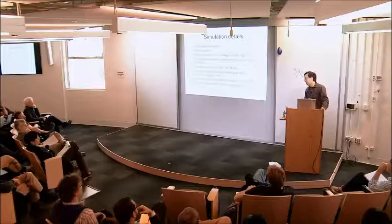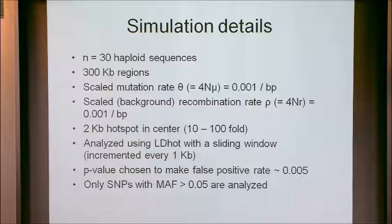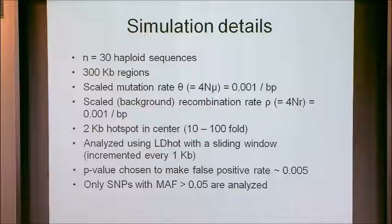Simulations done before took an optimistic case — they looked at the MHC region and assumed a very low background rate and very high hotspot rate, looking at power for detecting a hotspot where the rate is like 700 times the background. That's not so normal. We took the opposite strategy — a somewhat more pessimistic view. We've also done simulations for half of our assumed rate and one tenth of it as well. We also employed a minor allele frequency cutoff of 0.05, for reasons I'll talk about later.